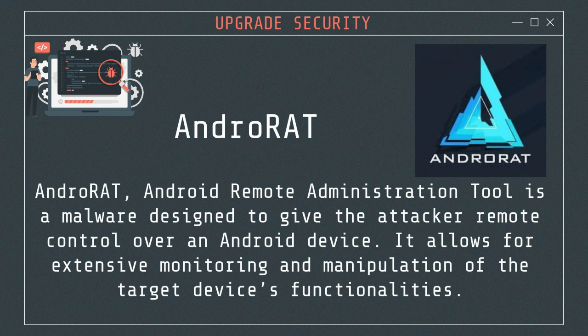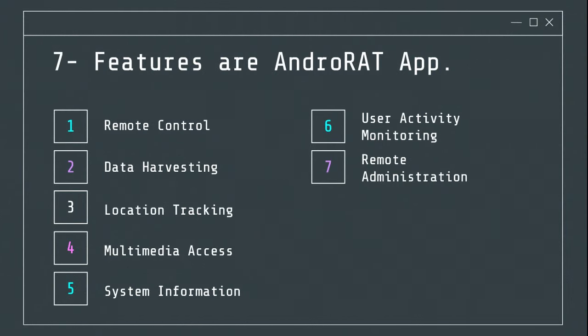Number 4: AndroRat is an Android remote administration tool — a malware designed to give the attacker remote control over an Android device. It allows extensive monitoring and manipulation of the target device's functionalities. While AndroRat can be used for legitimate security testing purposes, it is often associated with malicious activities.